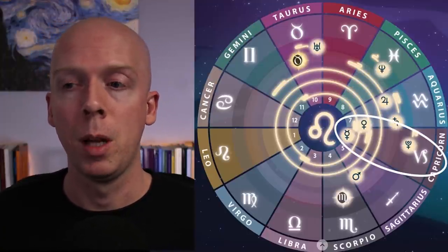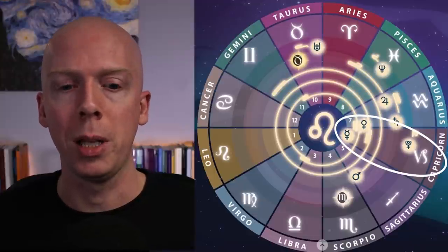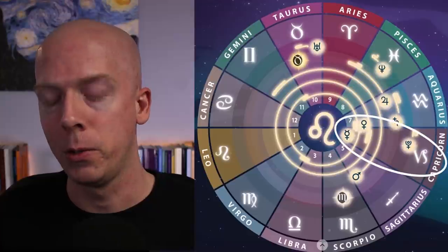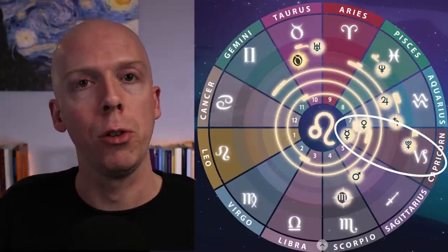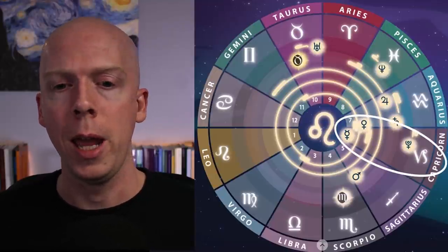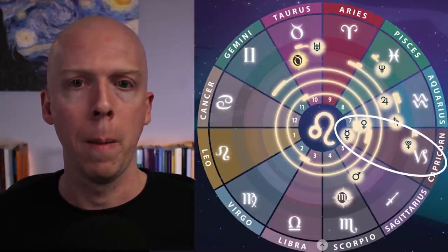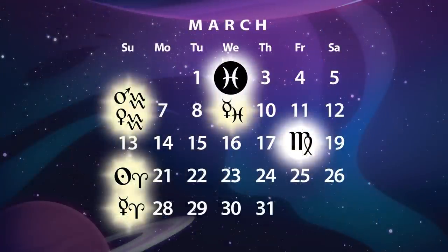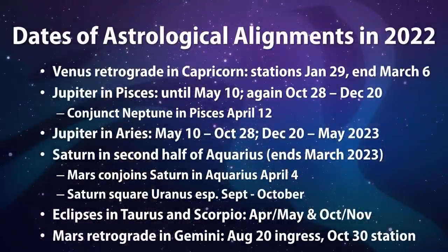That same advice applies to sixth house workplace things. If there's some sort of workplace issue, then it's going to be more pressing to address starting in late January and going through until early March, which is when Mars will depart from Capricorn along with Venus on the same day on March 6.